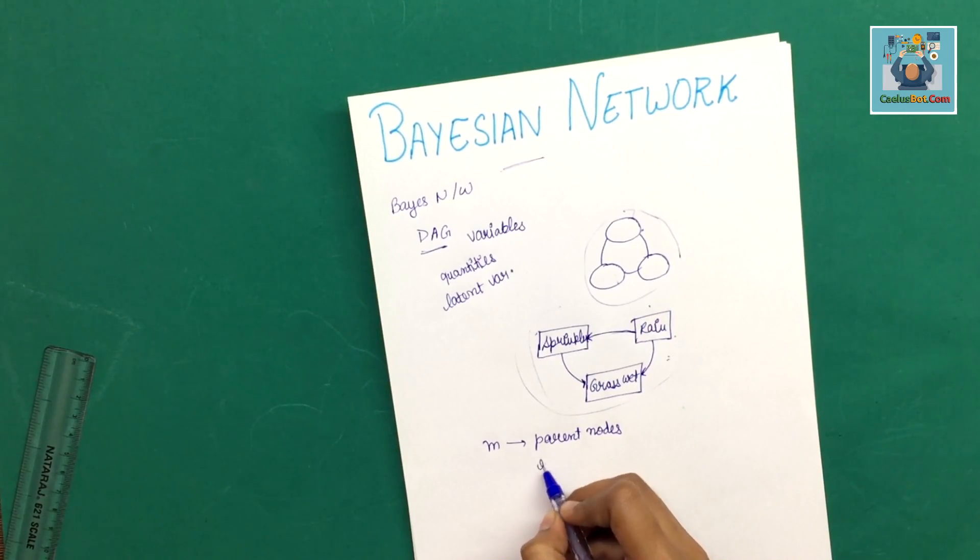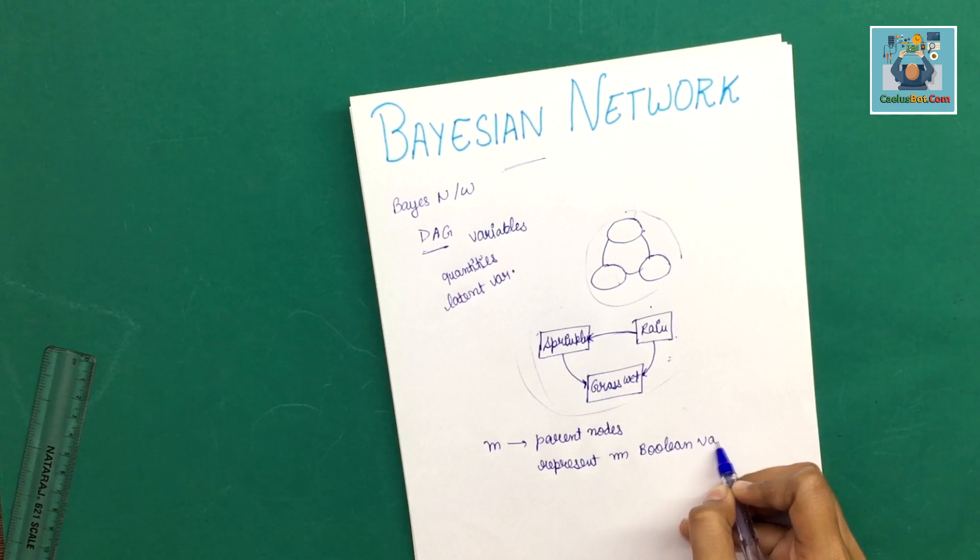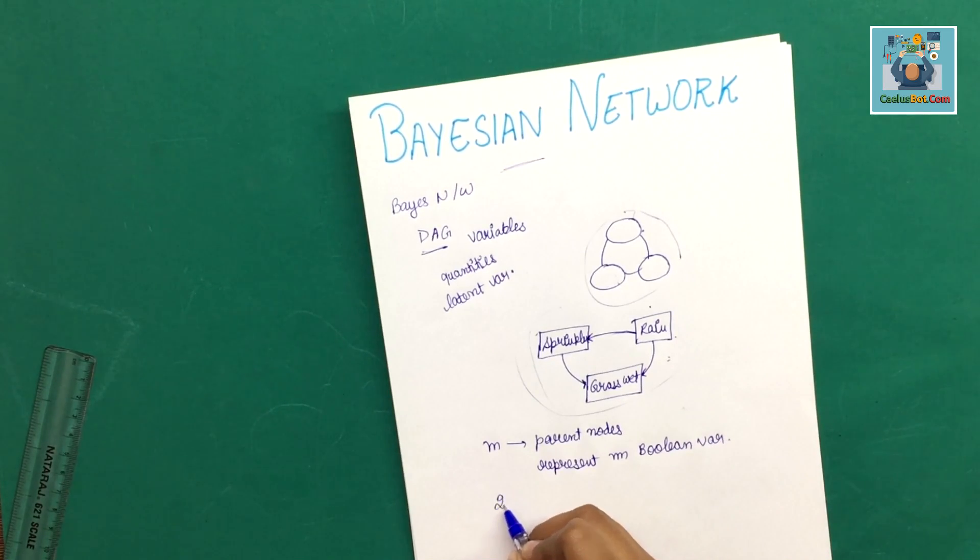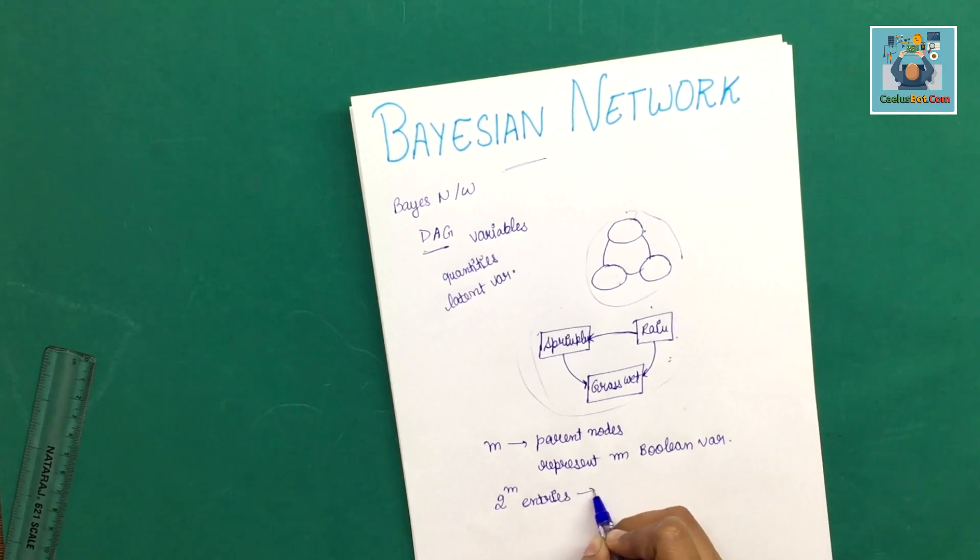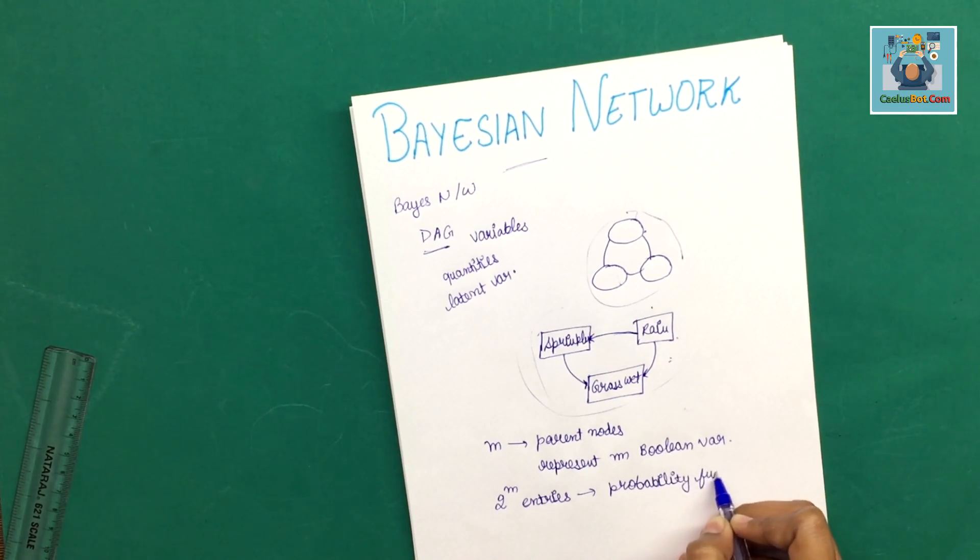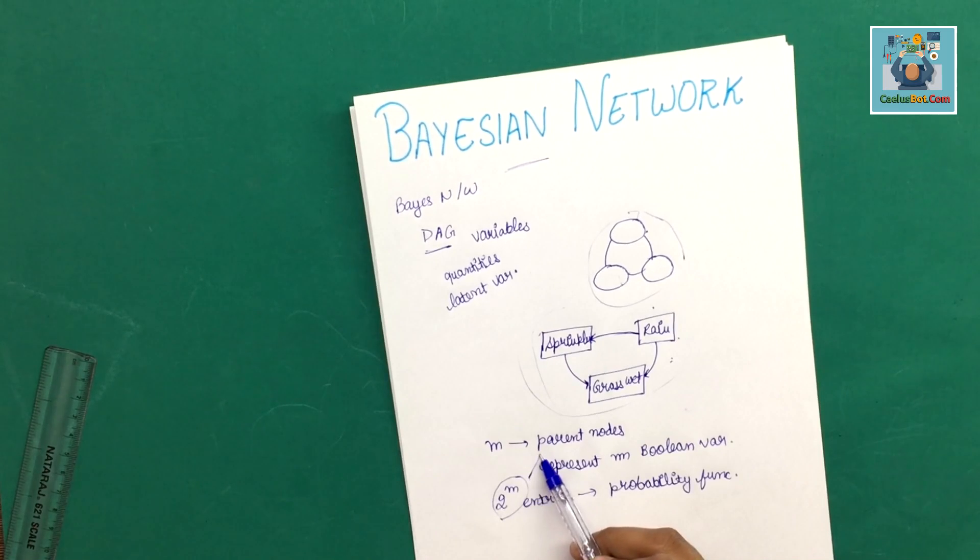What does this represent? This represents M, which is our Boolean variable. This represents a probability function. One entry for each of the 2 raised to par M possible combinations of its parents being true or false.